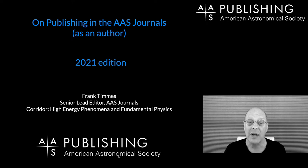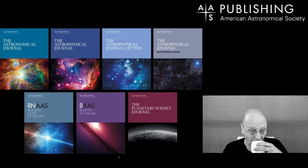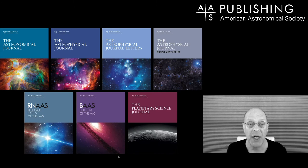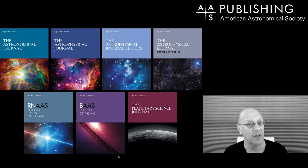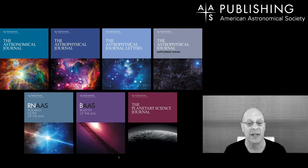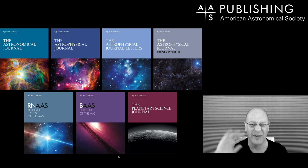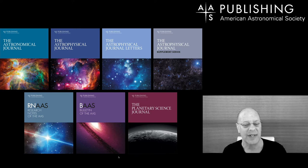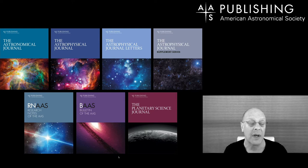To be clear on which journals: the AJ (Astronomical Journal), APJ (Astrophysical Journal), APJ Letters, APJ Supplement, Research Notes, the BAS (Bulletin of the AAS), and our newest journal, the Planetary Science Journal. They all have their little different flavors — Research Notes and BAS are slightly different — but in general these are the journals we'll be talking about.